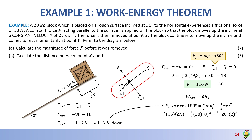This equals half of mass 20 kg times velocity final squared. The block comes to rest momentarily at point Y, so velocity final is 0 m/s. Minus half of mass 20 times velocity at point X — just before the force was removed — which was 2 m/s, squared. Our only unknown is Δx. The distance between point X and Y is 0.34 meters. That is your final answer for question B.